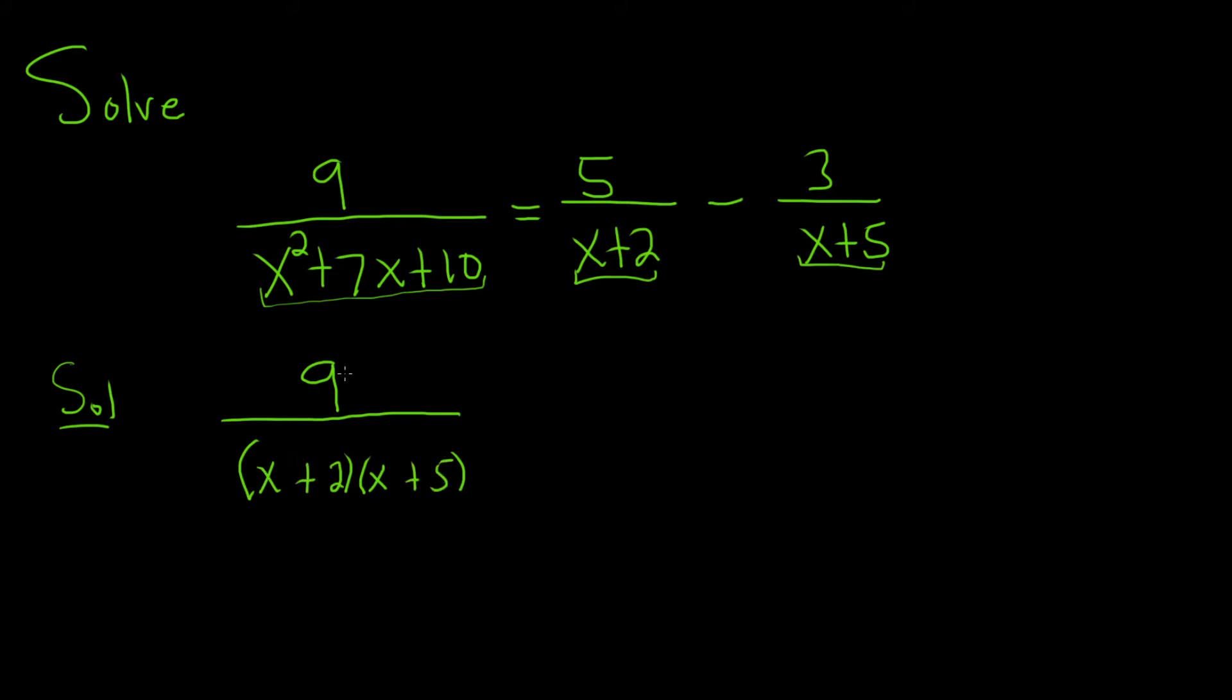If you do x times x, you get x squared. If you do the inside, which is 2x, times the outside, which is 5x, you get the middle term, which is 7x. And 2 times 5 is 10, so it does actually check.